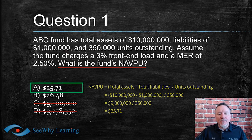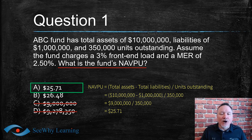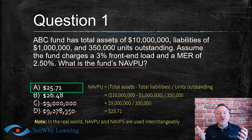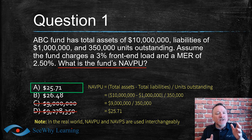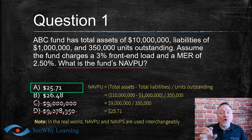A quick note about NAVPU: mutual funds structured as trusts issue units — so we say net asset value per unit. Mutual funds structured as corporations issue shares — so we say net asset value per share. In common language, these terms are used interchangeably. So if you see NAVPU or NAVPS on your exam, just realize you're talking about the same concept.